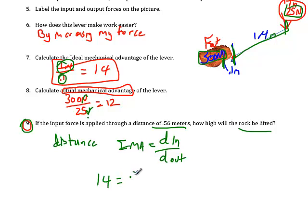14 equals .56 divided by the output distance, however high that rock is going to go. So, if I multiply both sides by the output distance, I have D times 14 equals .56. And then I can divide both sides by 14, and I get the output distance equals .04 meters.